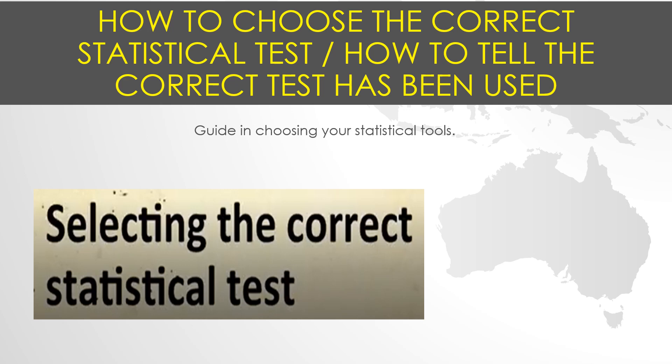Statistical tests are used in hypothesis testing. They can be used to determine whether a predictor variable has a statistically significant relationship with an outcome variable, or to estimate the difference between two or more groups. Statistical tests assume a null hypothesis of no relationship or no difference between groups, then determine whether the observed data fall outside the range of values predicted by the null hypothesis.